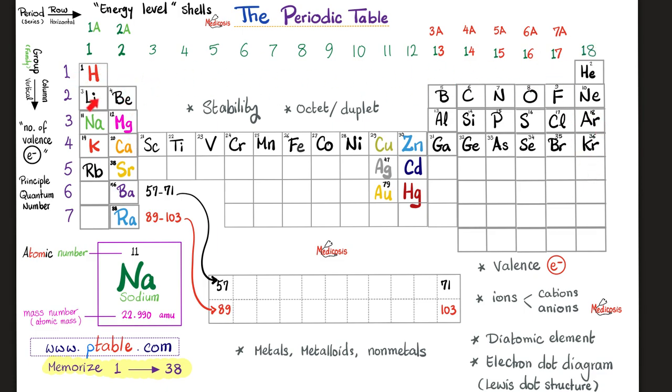As for columns, they are also known as groups. So we have 18 groups in the periodic table. Back to rows. They're also known as series. And we have seven of these. So the word period is the same as series is the same as rows is the same as going horizontally. Conversely, the word column is the same as group is the same as going vertically.